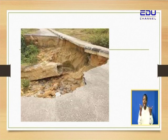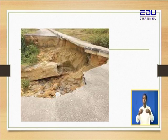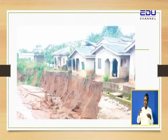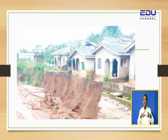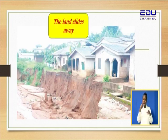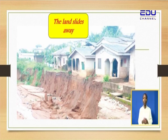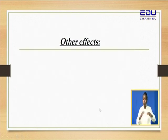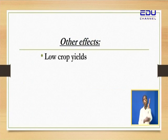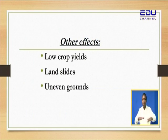You may find these gullies on roads — the road breaks off. Another example: a house where the person is living but their land is sliding away because they are not taking care of that environment. Negative effects include: low yields, landslides, and uneven grounds. If the land is bare and there is splash erosion, you're going to have tiny holes on the ground.